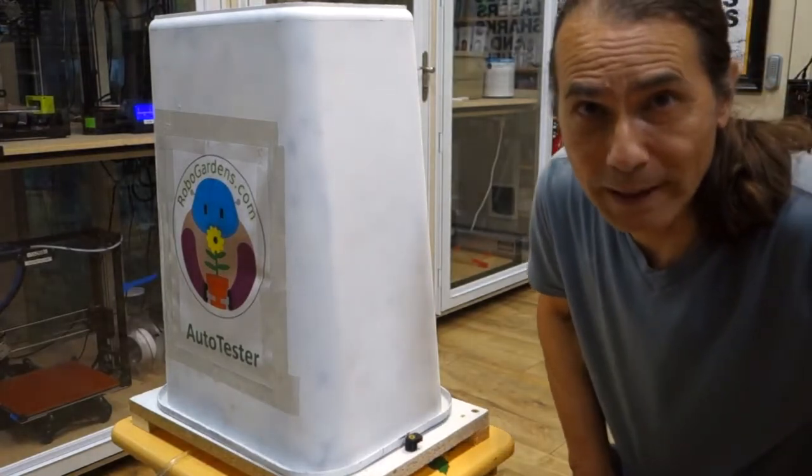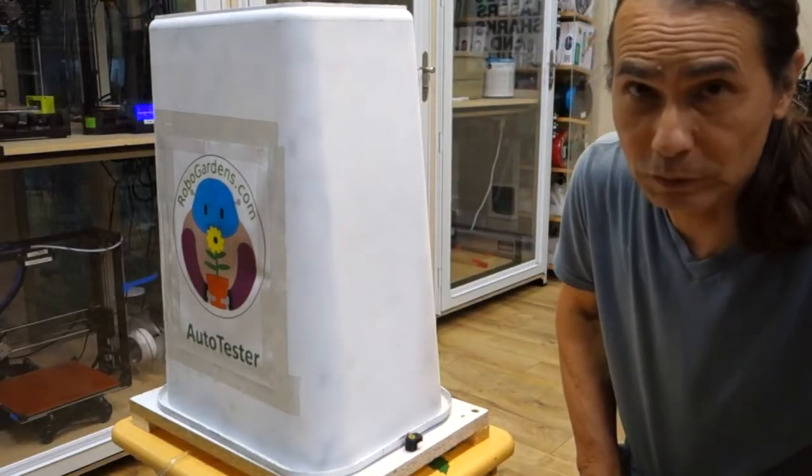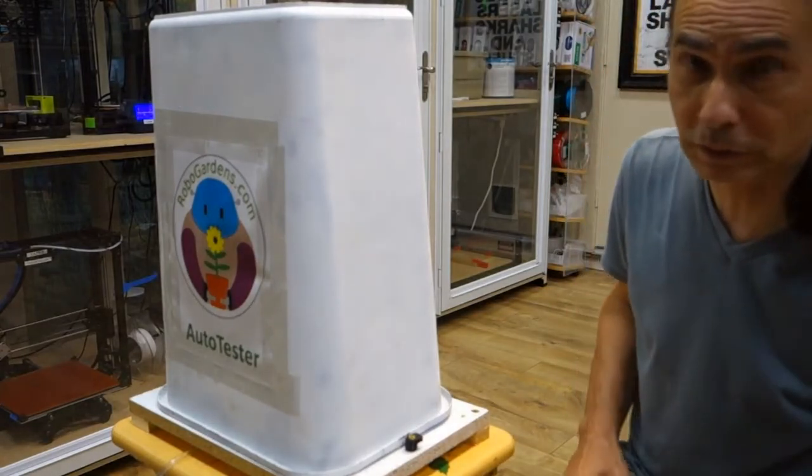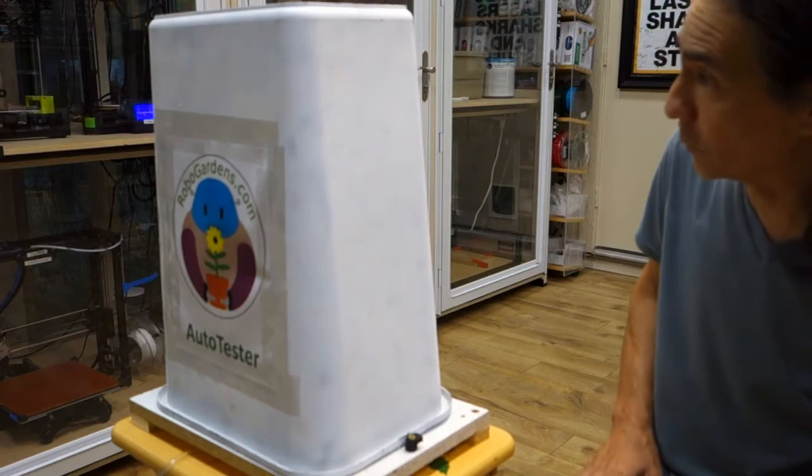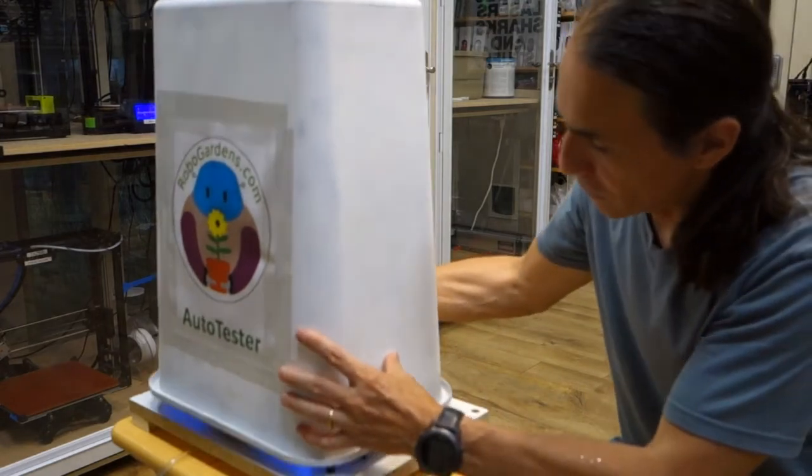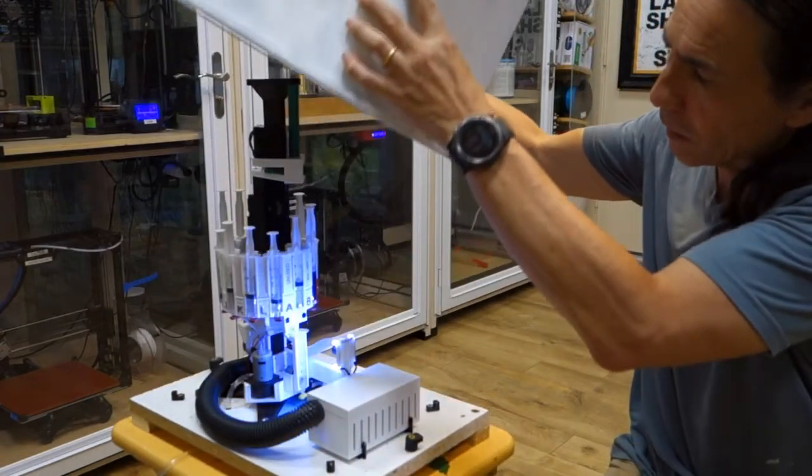Welcome to the Robo Gardens Lab. Let me show you what we have here. First I need to take off the cover which looks suspiciously like a painted trash can. And then you can see the auto tester.